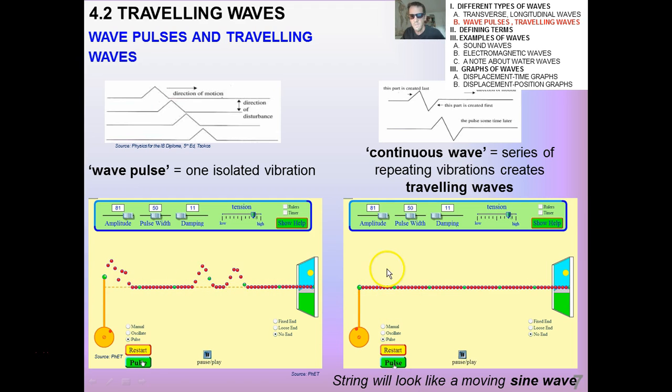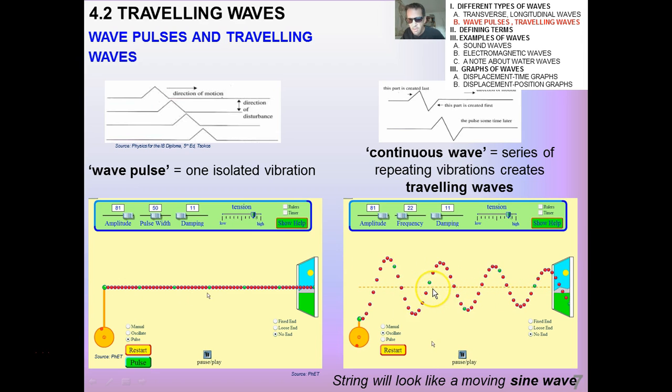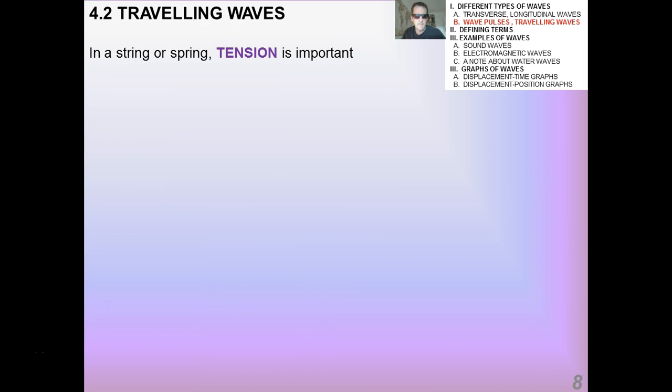In contrast, a continuous wave is a series of repeating vibrations that creates what we call traveling waves. And traveling waves look like a sine graph, basically, a wave that goes on forever in both directions and positive and negative. Essentially, this string will look like a moving sine wave. And it's instructive for you at this point to keep an eye on one particular bead, say one particular green bead, like this one right here where I have my cursor, you see how it goes up and down and up and down in simple harmonic motion.